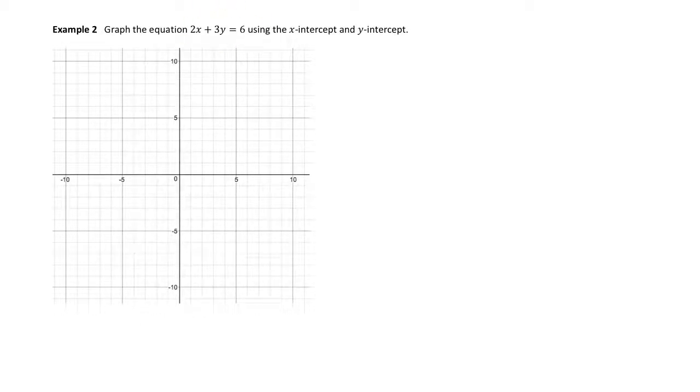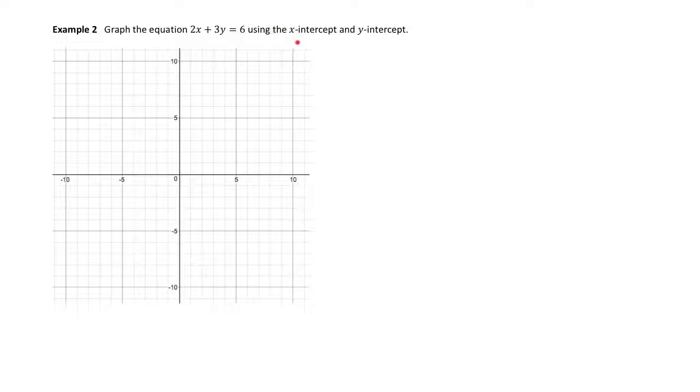In example two, I still want to graph this equation, which will be a line, but I noticed that this is not in the form y equals mx plus b because y is not by itself. Since this is a line, you only need two points to graph it. So instead of creating a table of values, which won't be very easy the way this equation is written, we're going to find the x-intercept and the y-intercept, plot those points, and connect them with a line. This is just a different strategy for graphing a line using these two specific points.